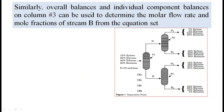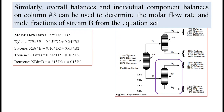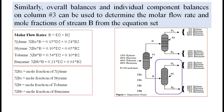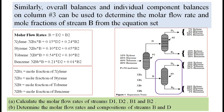Similarly, overall balances and individual component balances on column 3 can be used to determine the molar flow rate and mole fractions of stream B. We apply steady state material balance on column 3 to get B = D2 + B2, and four component equations for xylene, styrene, toluene and benzene, where xbx, xbs, xbt and xbb are the mole fractions of xylene, styrene, toluene and benzene in the bottoms. By solving this system, we find D1, D2, B1, B2 and the composition of streams B and D.